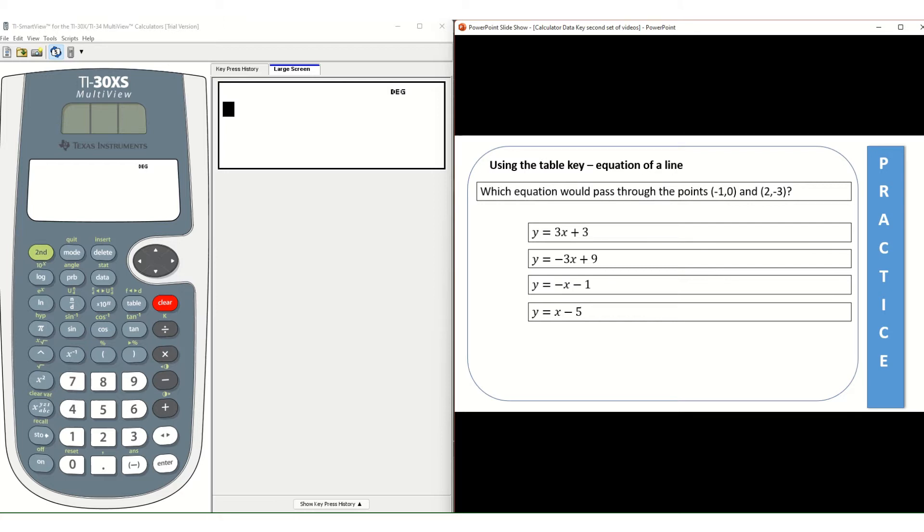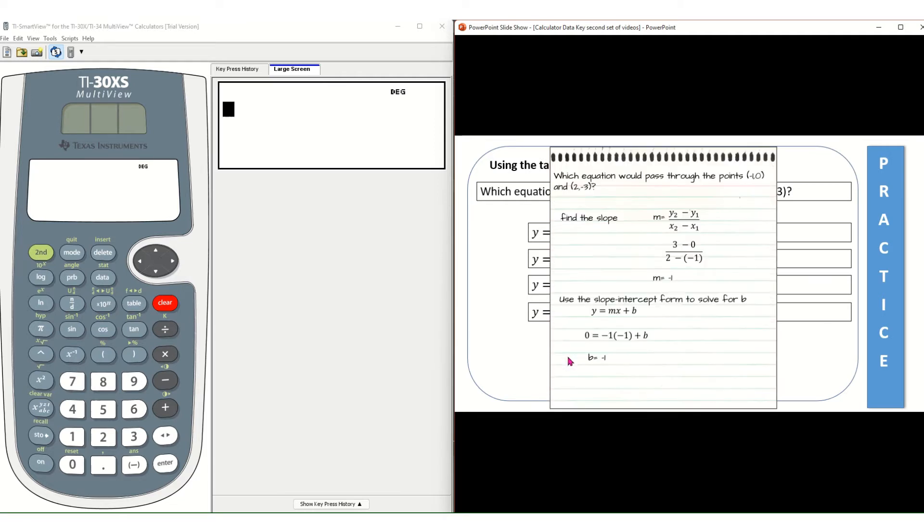Your answer choices are different equations in the y equals setup that you might be able to choose from. Many of you learned that when you want to solve these types of equations, you need to find the slope and then you could find the slope intercept form or use the slope intercept form to look for B, and then you could find the answer from the answer choices.